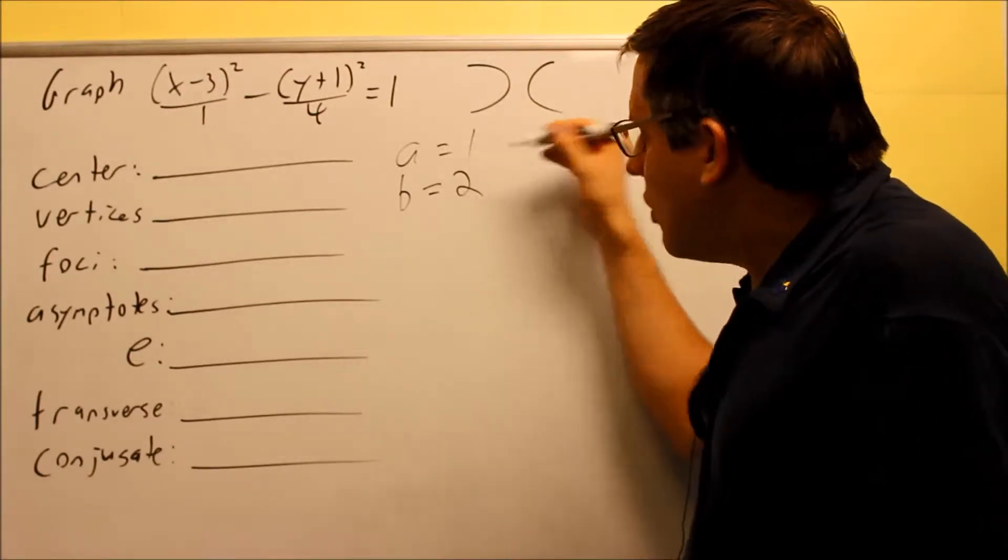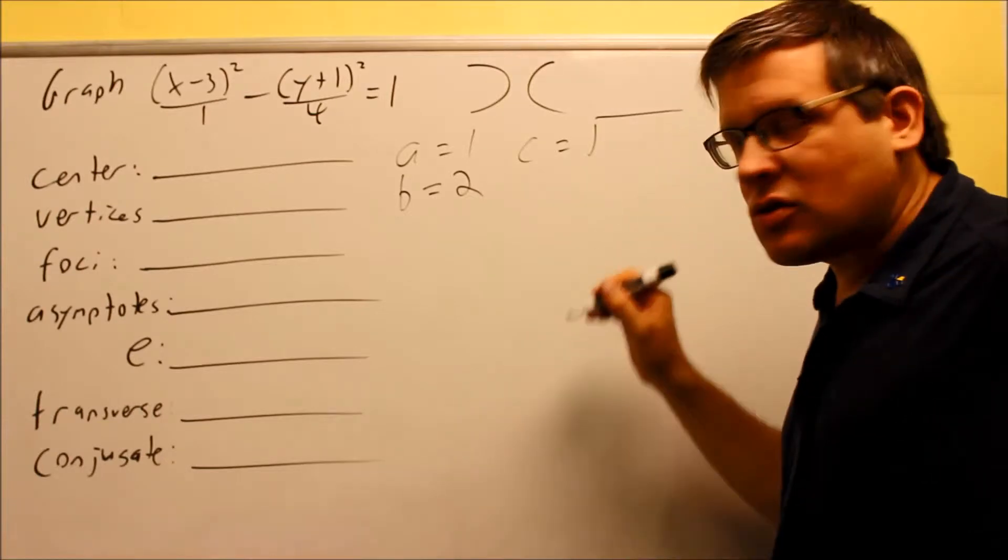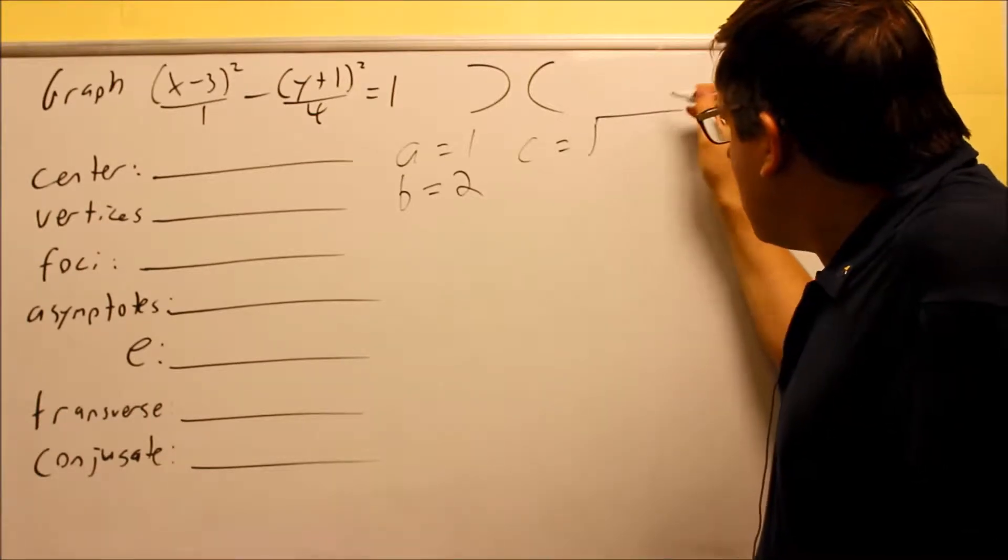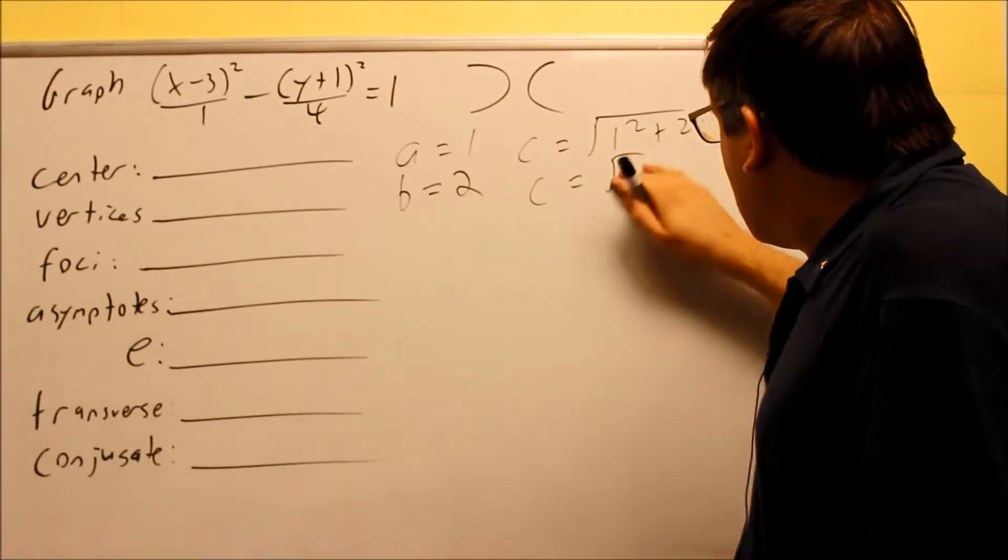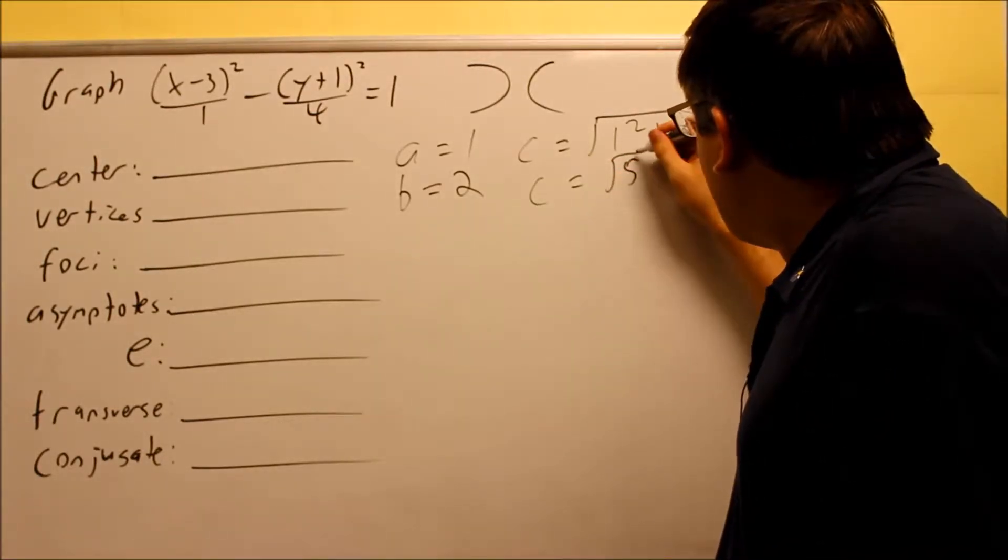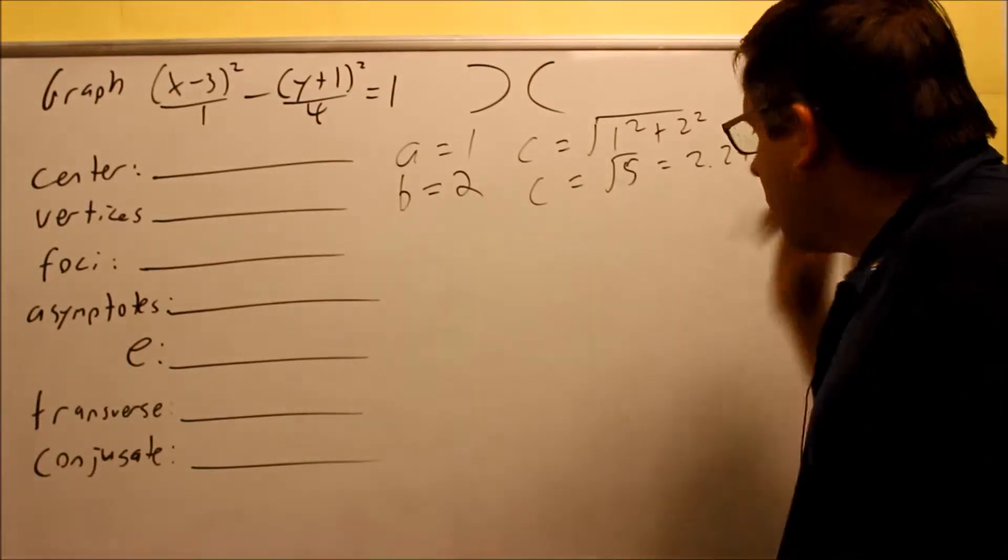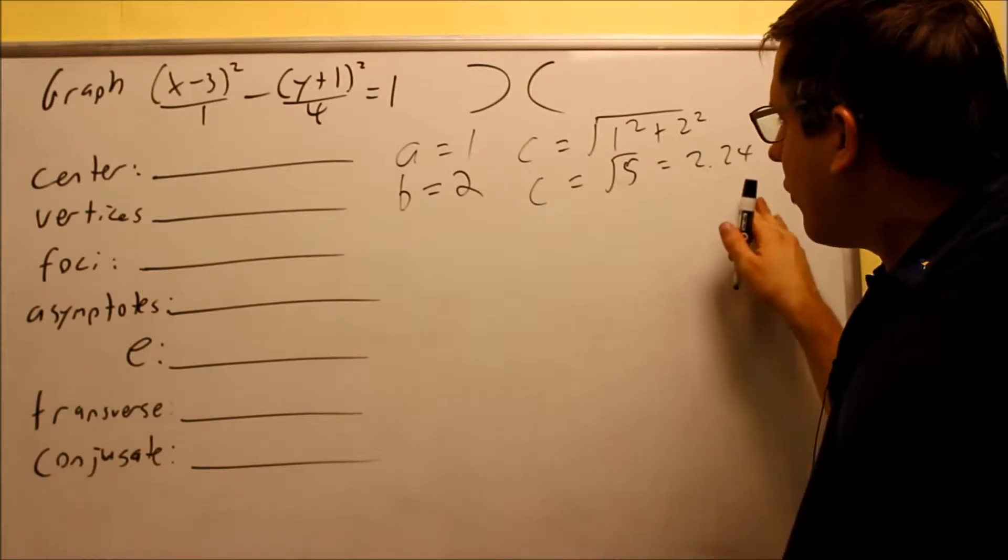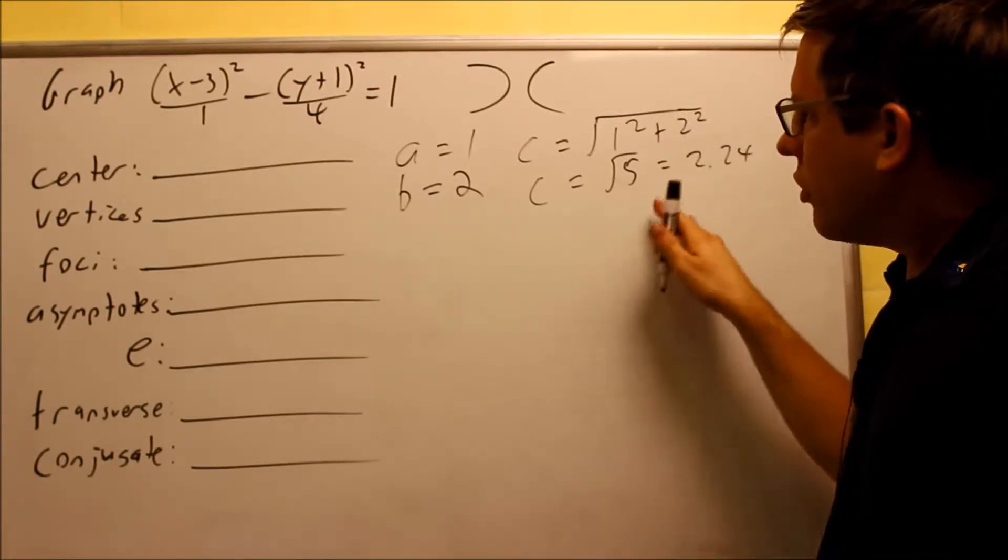So this happens that the A is smaller this time. Now, the formula for C, we're still going to do the same thing. It's still A squared plus B squared. So we have 1 squared plus 2 squared. So C is going to be the square root of 5. So square root of 5 is about 2.24, somewhere around there.